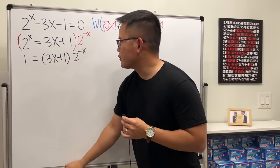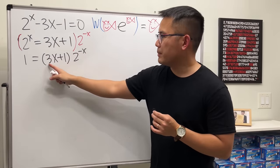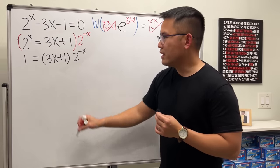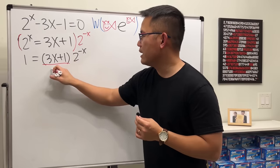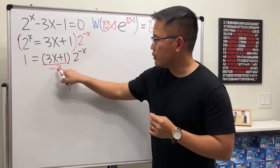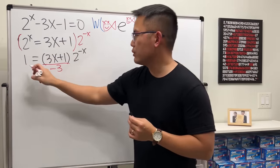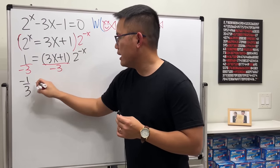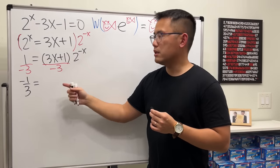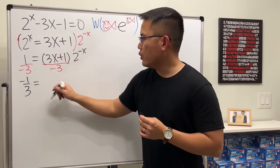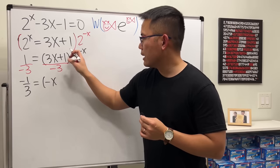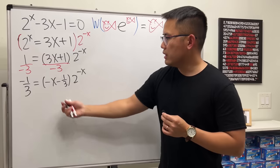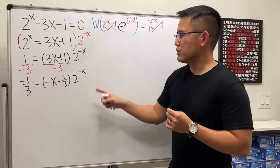Instead of making the exponent 3x, let's make the 3x become −x. That's easier: just divide by −3. The exponent reduces to −x. We do the same on the left side, giving −1/3, and on the right side the 3x + 1 divided by −3 gives (−x − 1/3). We still have 2^(−x), and now the −x in the coefficient and the exponent match.